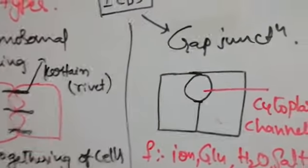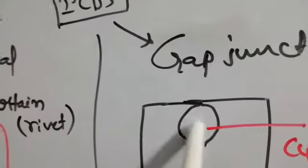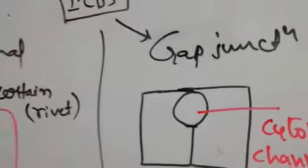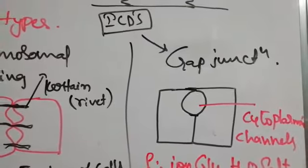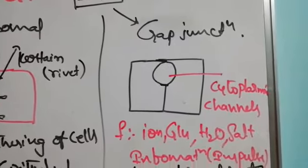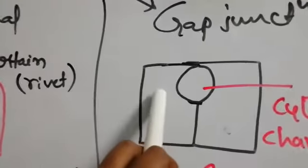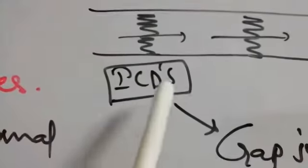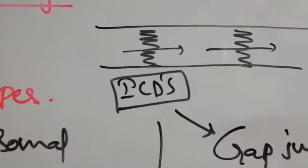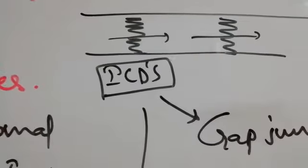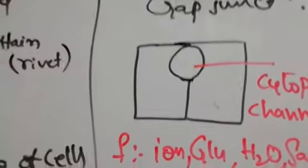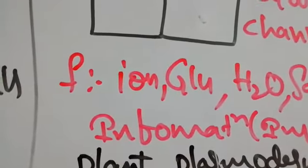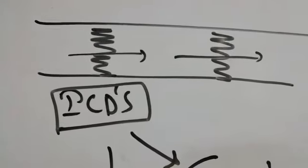In the gap junction, the cytoplasmic channels of two cells combine, forming the gap junction. The cytoplasm of two cells is combined to form this junction. Its function is the transfer of ions, glucose, water, salts, and impulses from one cell to another. It is located at the intercalated discs of cardiac muscle, and it is also present in the plasmodesmata of plants to carry ions, glucose, and impulses.